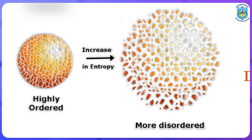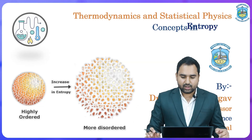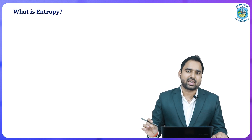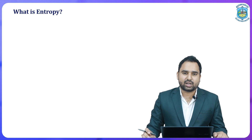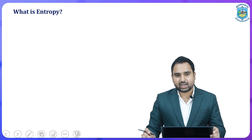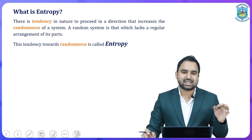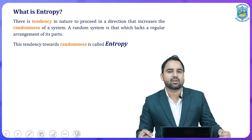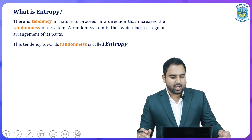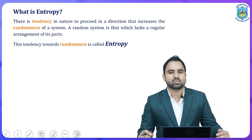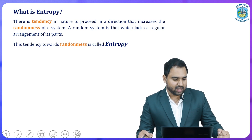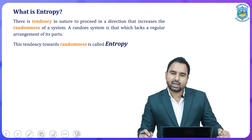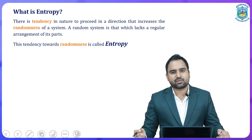Entropy is not just a word in physics — it is a word which can be helpful to explain many situations in nature. Entropy is easily defined as the degree of randomness or degree of disorder. The systematic definition is: it is the tendency in nature to proceed in a direction that increases the randomness of a system. Randomness is the disorder or the free movement of things associated with nature. A random system is one which lacks a regular arrangement of its parts. More disorder, more chaos — that means more entropy. This tendency towards randomness is called entropy.